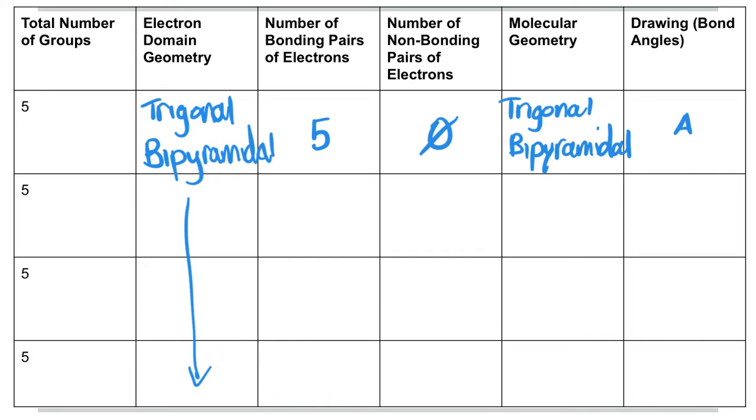So the trigonal comes from triangle, the bi means two, and pyramidal means pyramid. So it's going to have one going up and one going down, and then in the center we have a trigonal planar kind of shape.